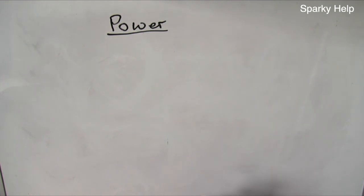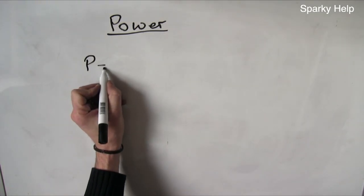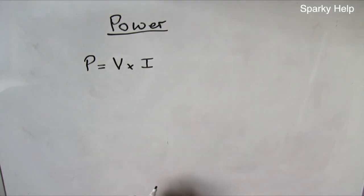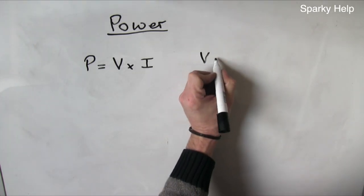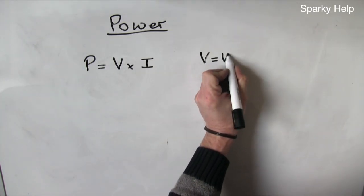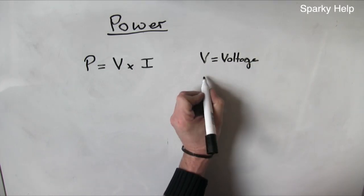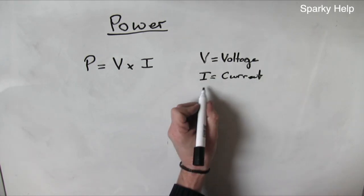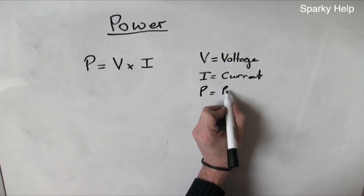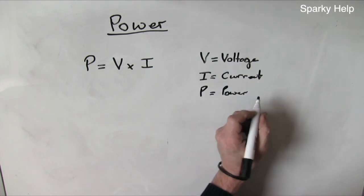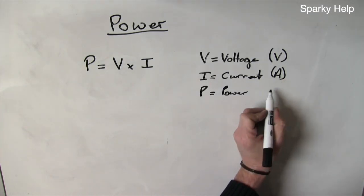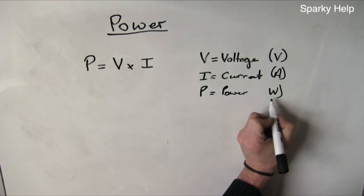Power. Electrical power. Three formulas to start with. Let's start with the basic one: power equals V times I, where we have the voltage, the current, and power. Voltage, we already know, is measured in volts. Current is measured in amps. Power is measured in watts.